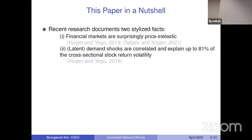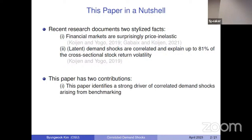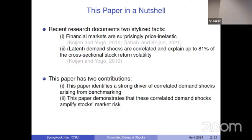Here comes my paper. My paper has two contributions. The first contribution is to identify a strong driver of correlated demand shocks arising from benchmarking. I show that the resulting correlated demand shocks increase stocks' market risk, and the implication of market risk is strongly priced.